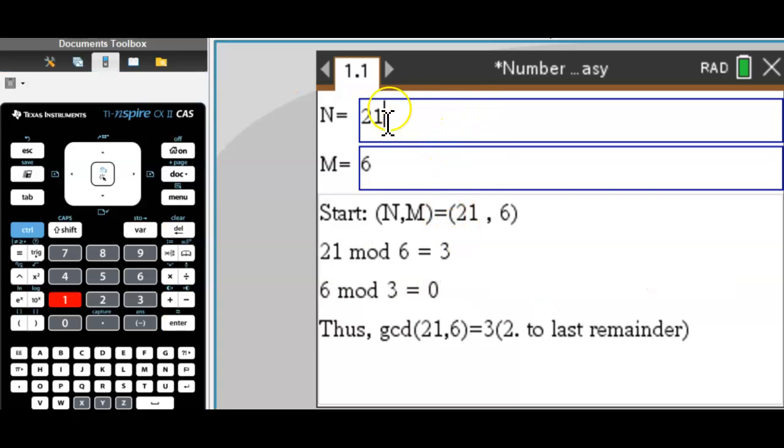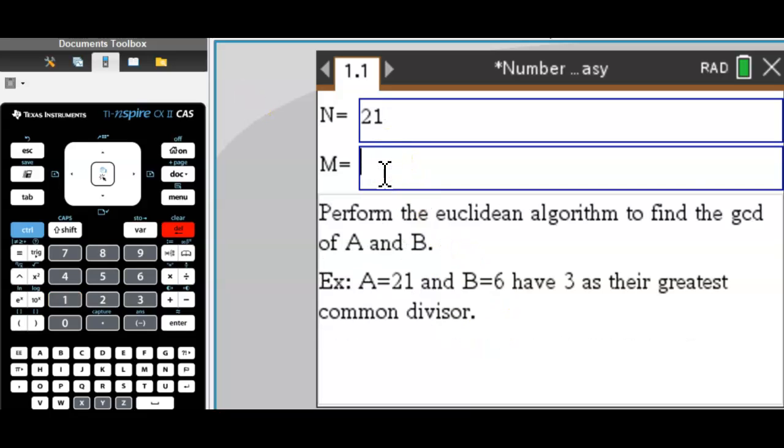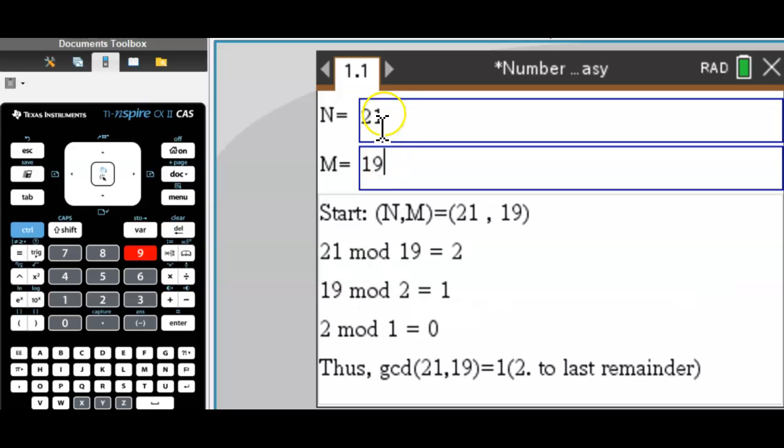You enter two integers, 21 and 6, for example. We immediately get 3 as the greatest common divisor. Let's make that a bit more interesting. Well, 21 and 19 don't have a common divisor, so they're co-prime. So the greatest common divisor is 1.